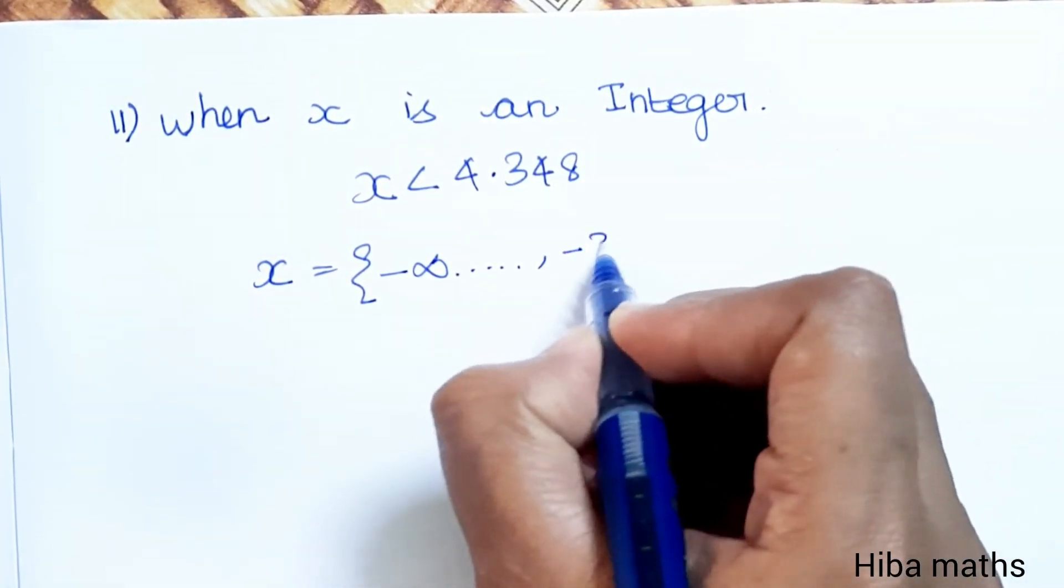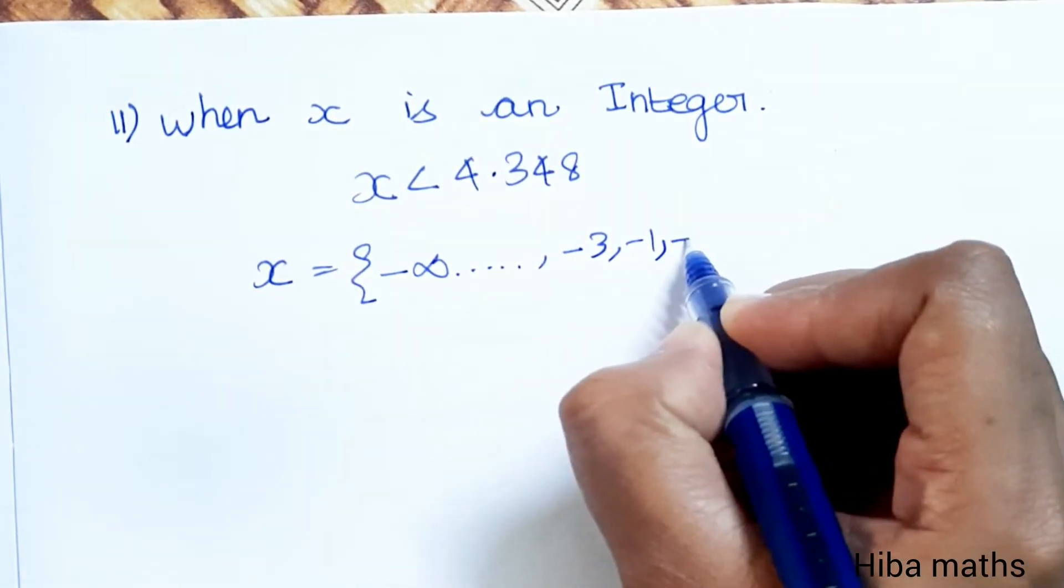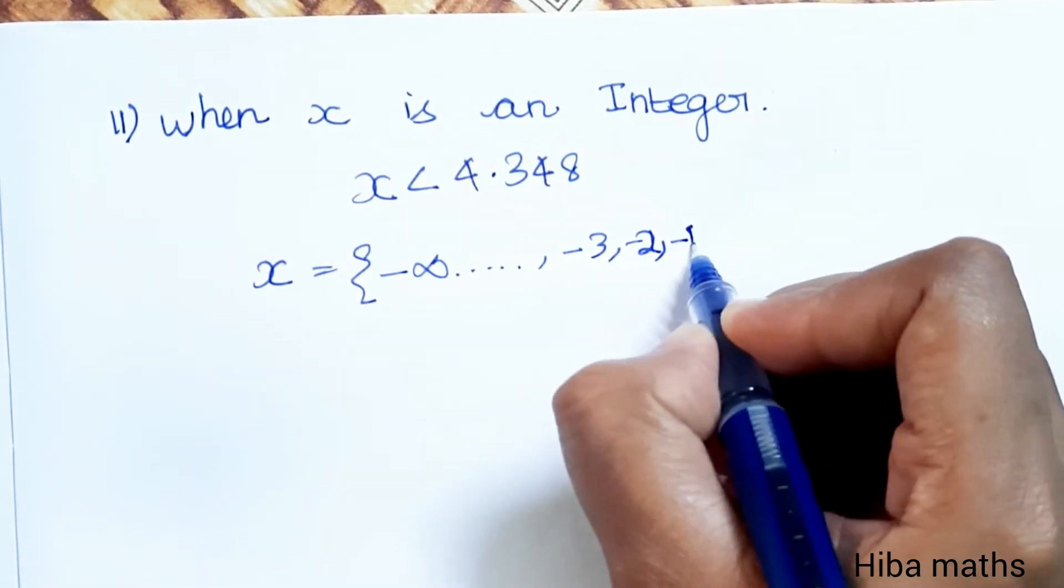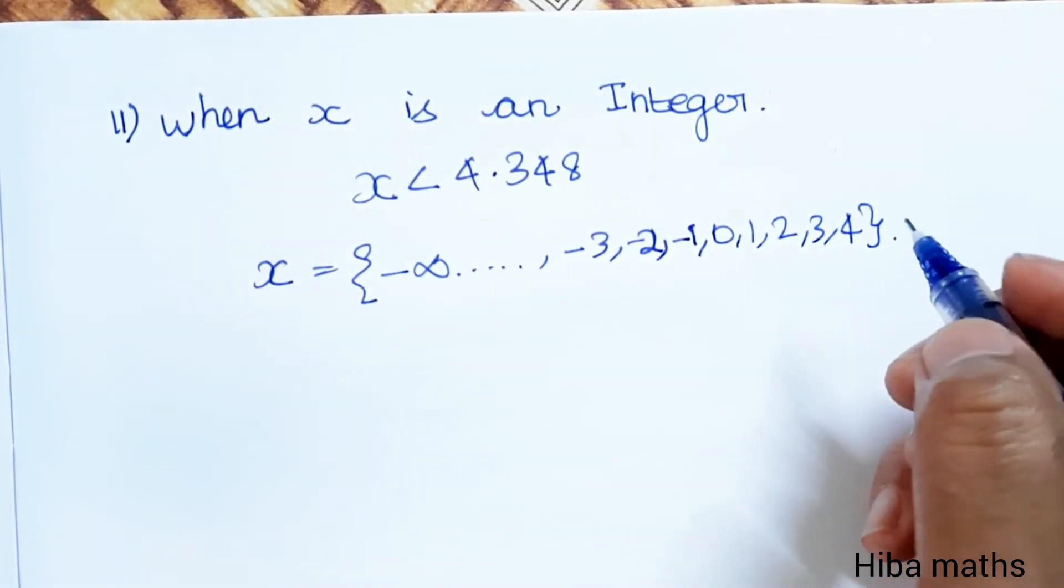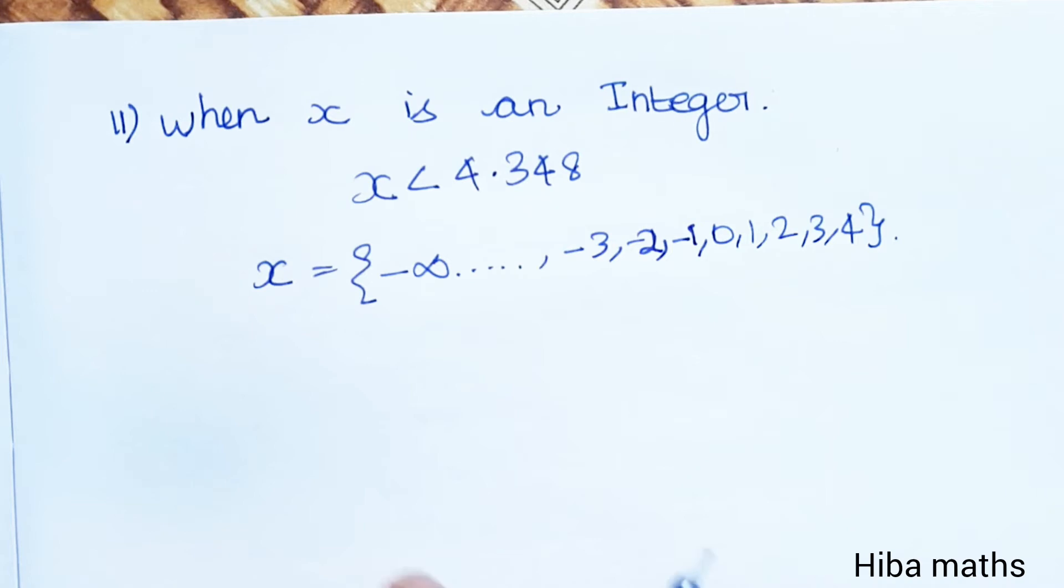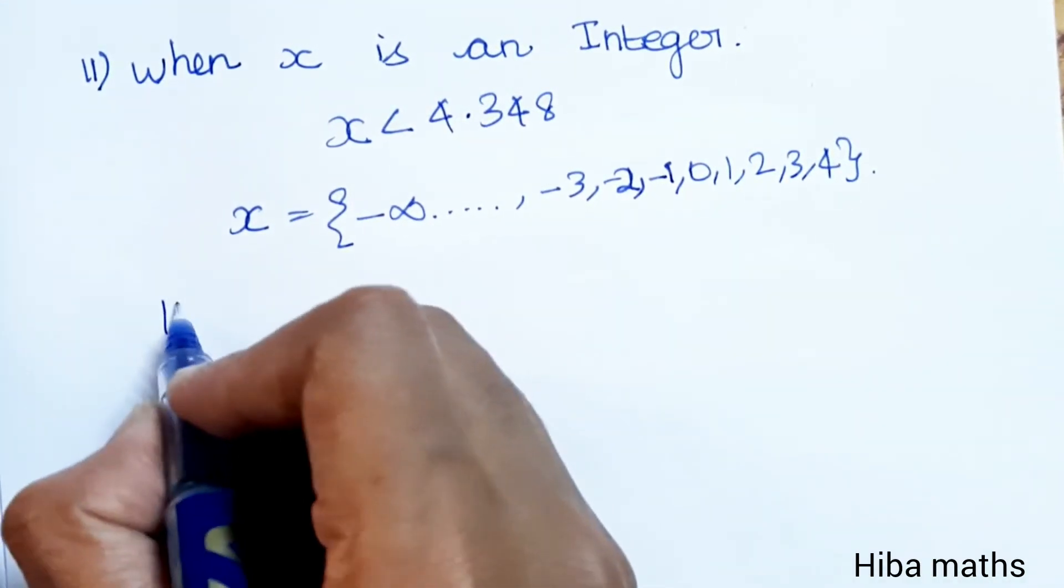The values are minus infinity, which is dot dot dot minus 3, minus 2, minus 1, 0, 1, 2, 3, 4. Hence we have the solution.